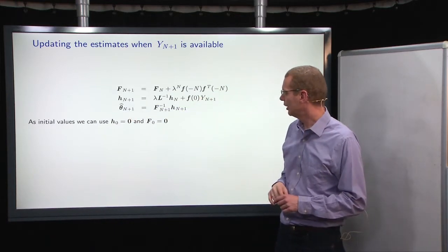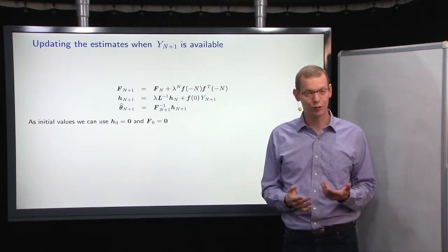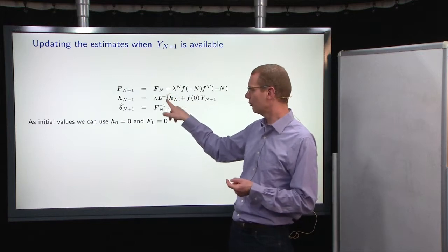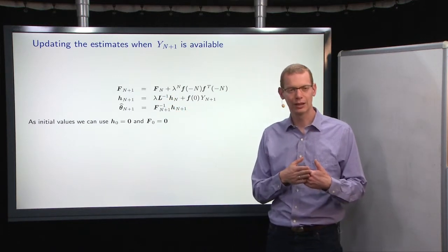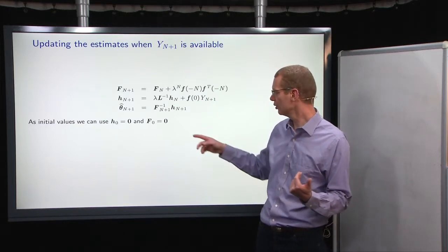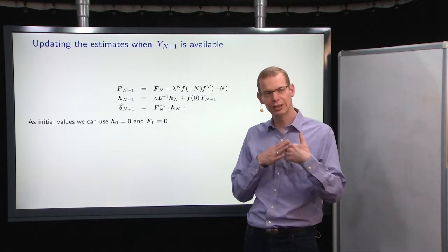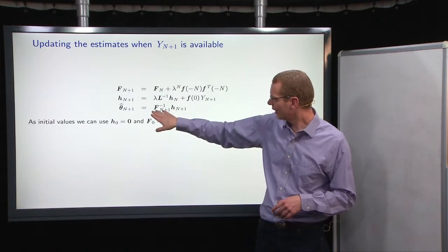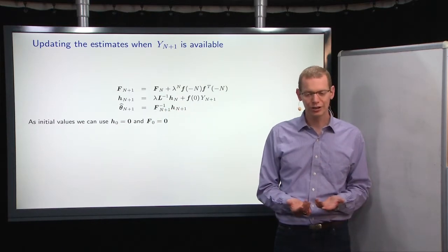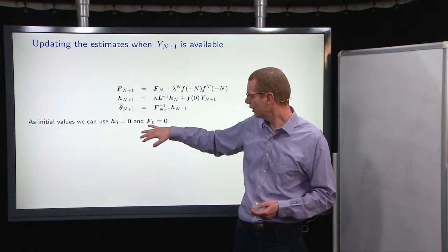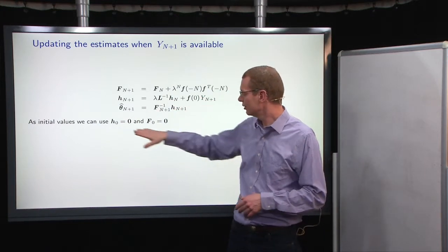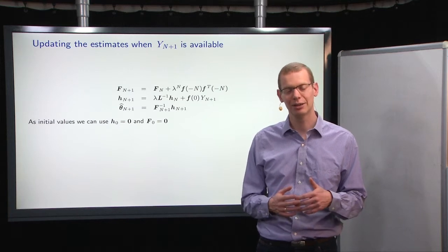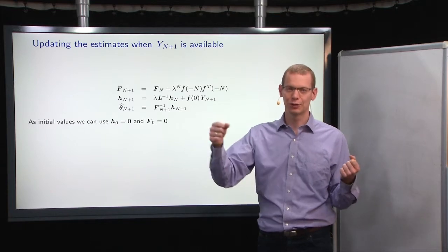For the h update here, well, the last bit here is the same as it was before. We just have to look at, you can say, the most recent observation, and how is the influence of that at lag zero. And then we have to take our previous estimate and shift that backwards in time. That we can do by pre-multiplying by L inverse, and then we multiply it by lambda to also forget part of the estimate from last time. And then, of course, the estimate of theta. Here, you find that the same way, f inverse multiplied by h. If we do it this way, we need to find initial values of h_0 and f_0, and the obvious choice is to just use the appropriate matrix and vectors of zeros, and then everything will run. This corresponds to the same approach as in the simple exponential smoothing, where we just initialize with the first observation.